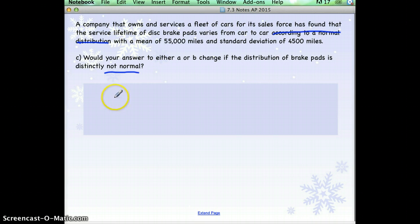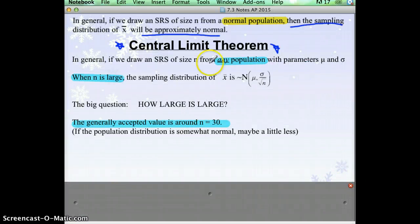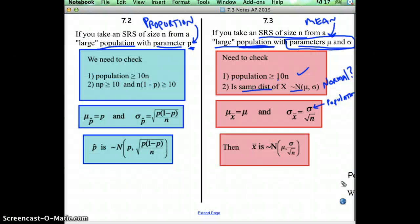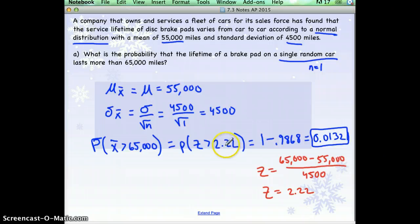Would our answer to part A change? Well, go back to this idea of the central limit theorem. If we're taking a simple random sample from any population, then our sample size has to be big. It has to be at least 30. So, in part A, is our sample size at least 30? No. Our sample size was 1.